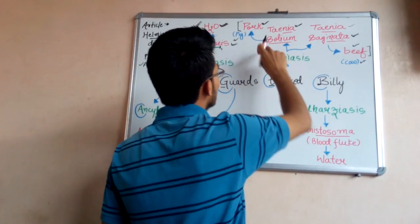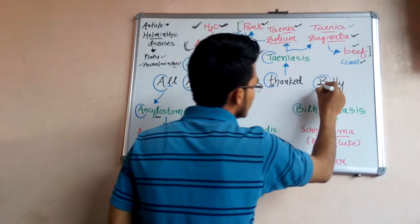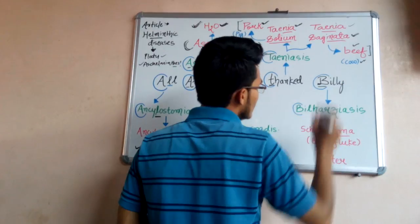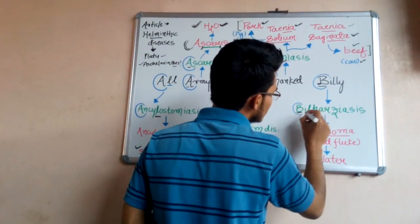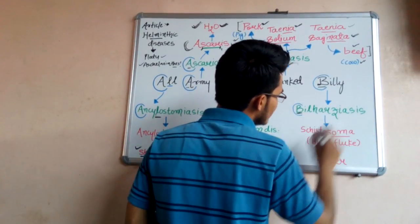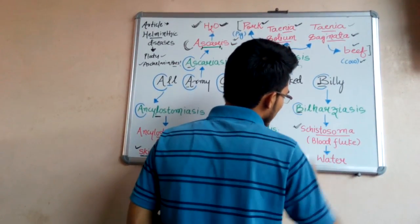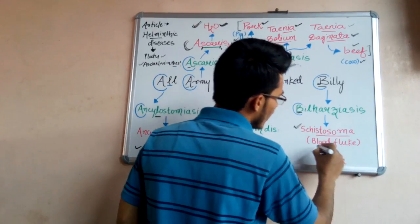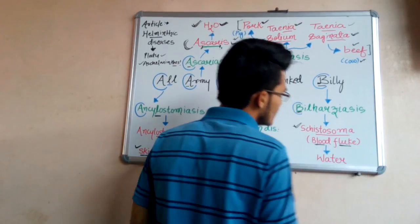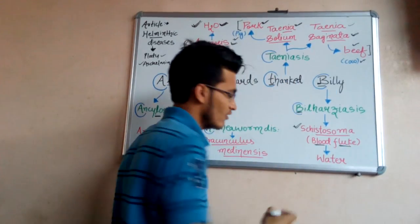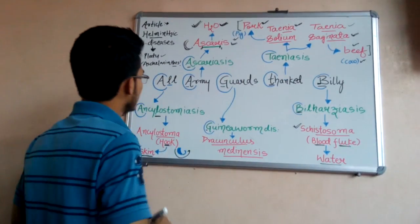Billy — that is 'B' — stands for Bilharziasis, which is caused by Schistosoma, also known as blood fluke. It enters our body via water.